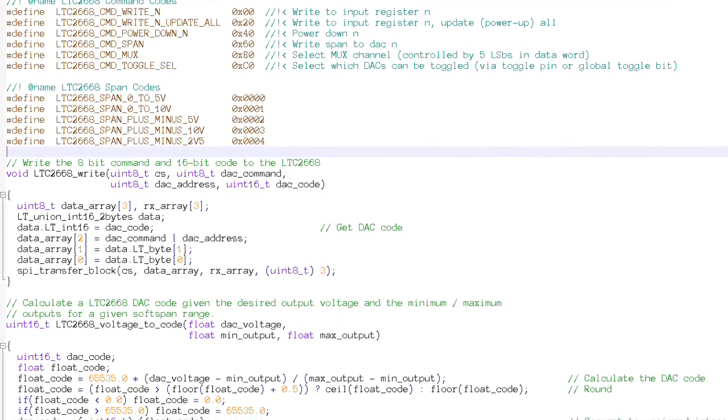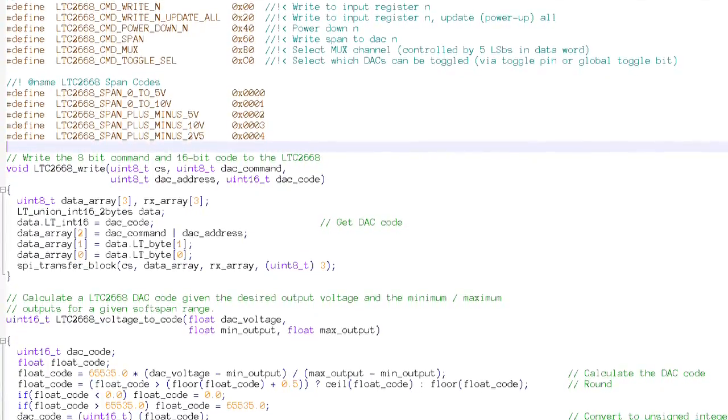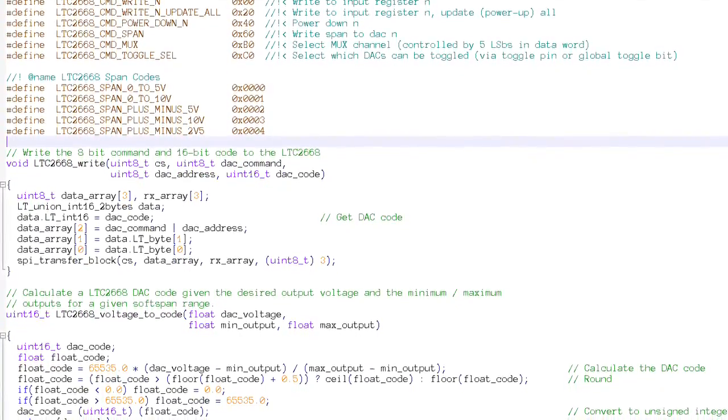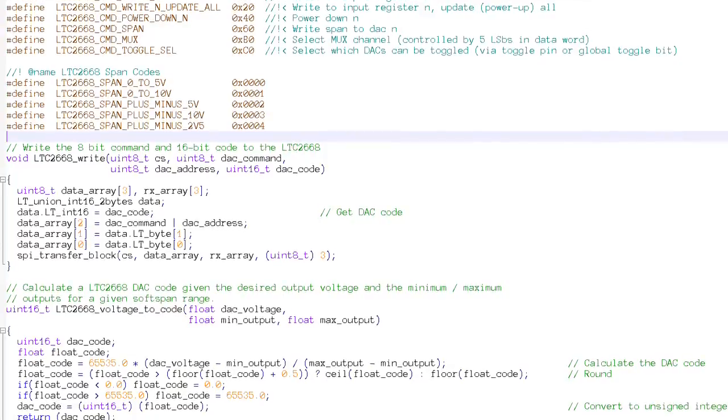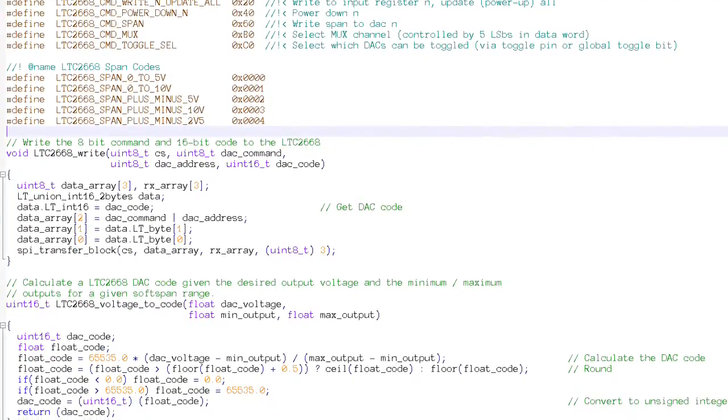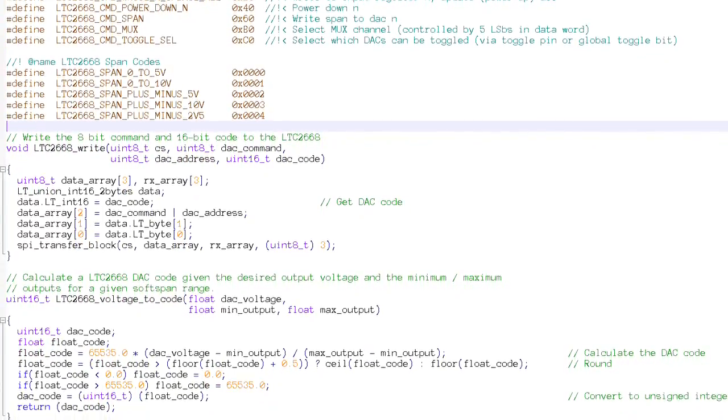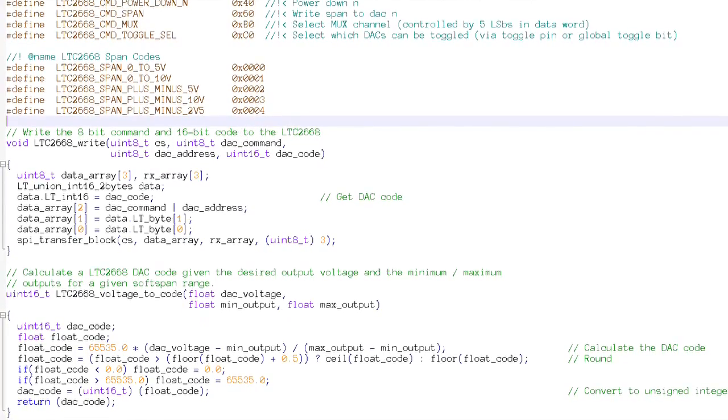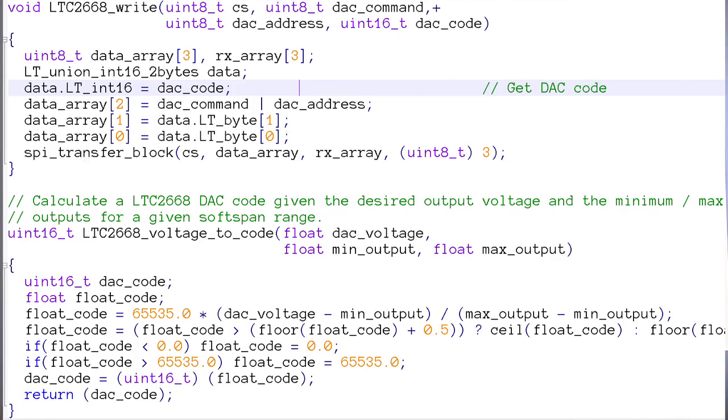The Linduino code for the LTC2668 includes header and library files with all of the relevant information from the datasheet translated to C code, including command definitions, bit definitions, and the like. There are functions that actually do the work of communicating with the LTC2668, demonstrating proper control of the SPI bus.